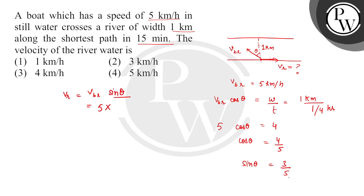So 5 into 3 by 5, the velocity of river water is 3 km per hour. I hope you understood it well, thank you.